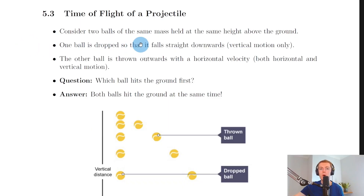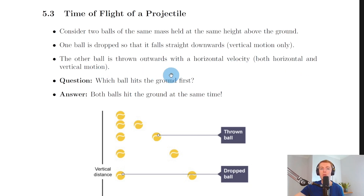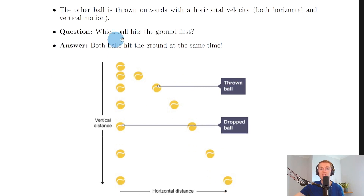To begin, consider two balls of the same mass held at the same height above the ground. One ball is dropped so that it falls straight downwards with vertical motion only. The other ball is thrown outwards with a horizontal velocity, so it has both horizontal and vertical motion — one falling straight down, the other following a curved path. The question is: which ball hits the ground first?